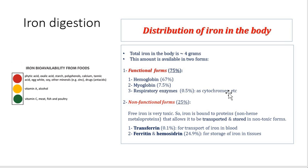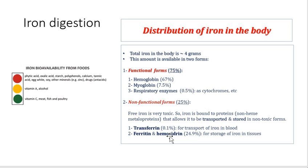The functional form is found in hemoglobin, myoglobin, and some enzymes like cytochromes. The non-functional forms are how iron is transported and stored in the body — transferrin is the transport protein, because in free form iron would be very toxic. Transferrin helps transport iron throughout the body, and ferritin and hemosiderin are the stored forms, which if exceeded in amount can be dangerous.